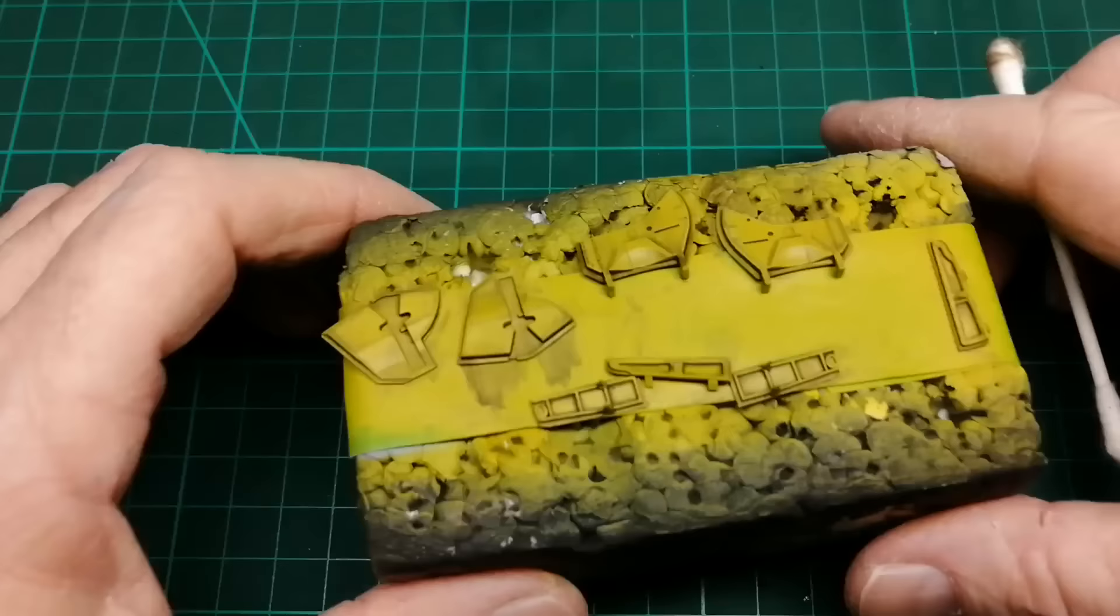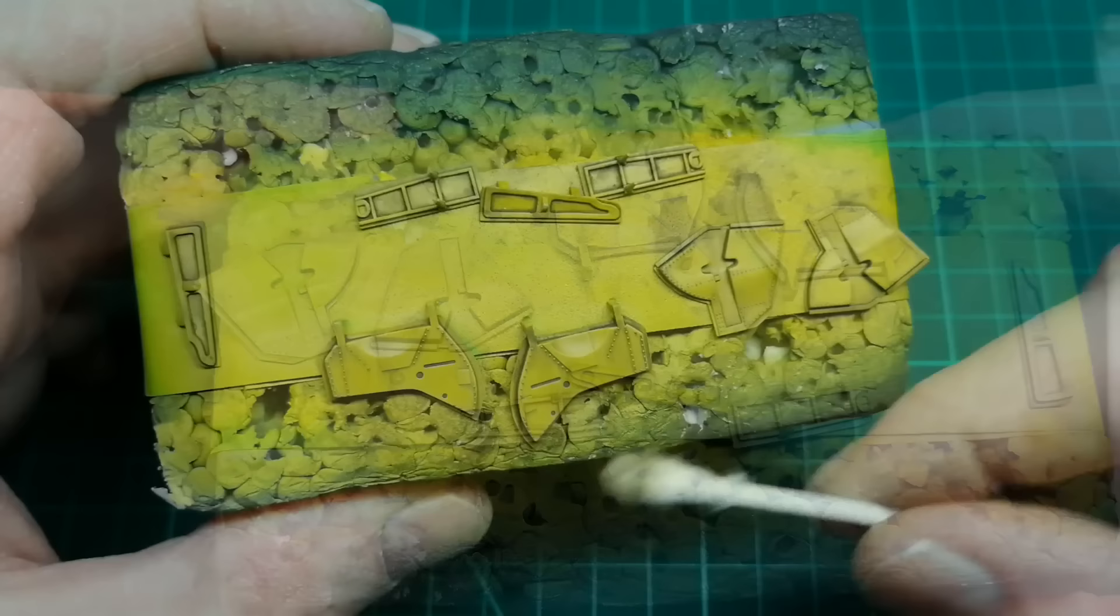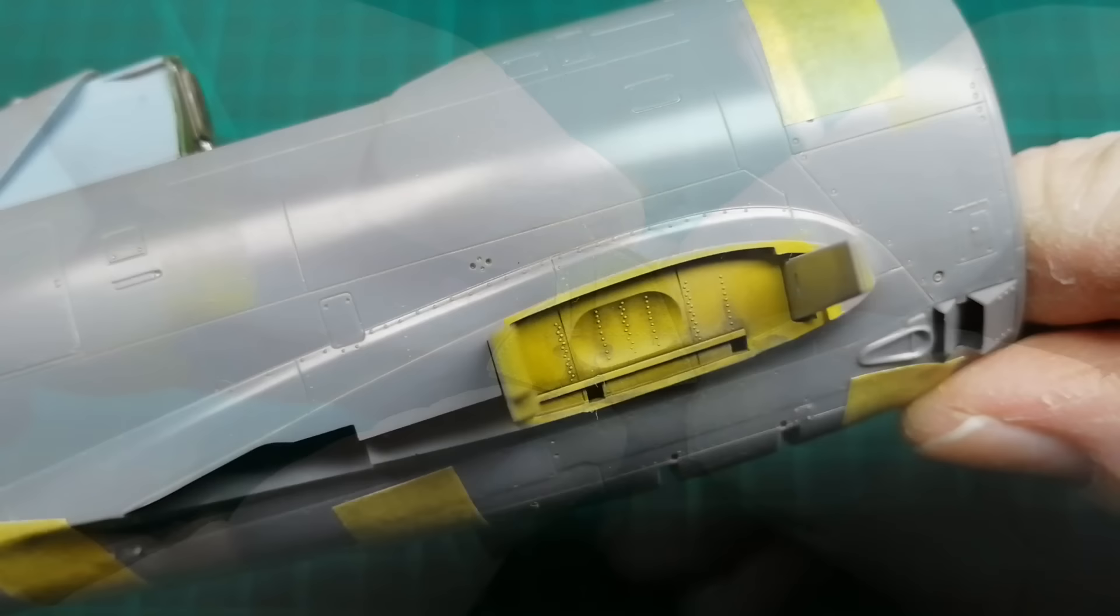So the undercarriage guard painted. And then a Tamiya black panel wash is applied and then cleaned up in one direction with white spirits once again. The wing's next.